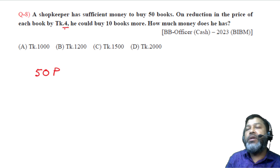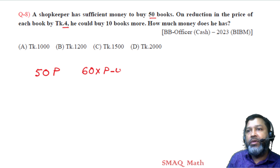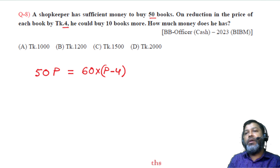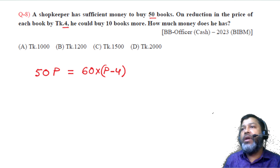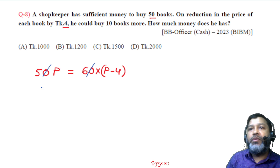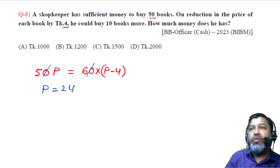After the price reduction of taka 4, he can buy 60 books. So 60 times (P minus 4) also equals total money. Setting 50P equal to 60(P minus 4) and simplifying gives P equals 20 taka per book.